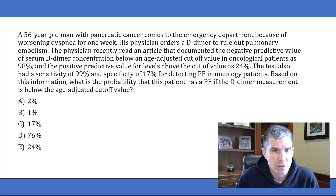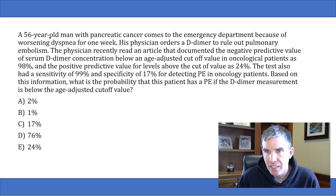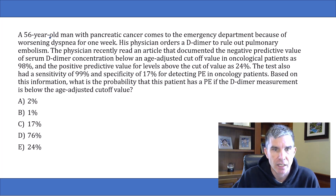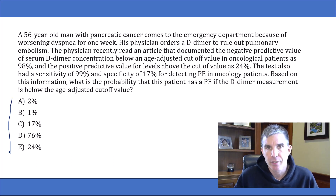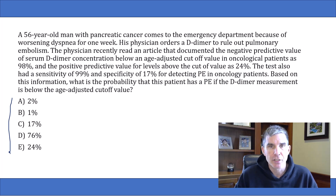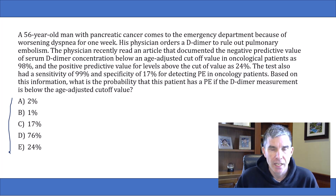Based on this information, what is the probability that this patient has a PE if the D-dimer measurement is below the age-adjusted cutoff value? They give five answer choices. Basically, this is a really straightforward question about negative predictive value, but it's hidden behind some super confusing dense language designed to get you lost so that you can't answer a very straightforward question.